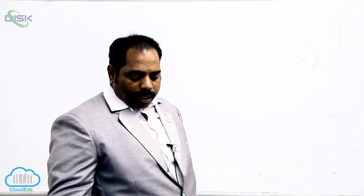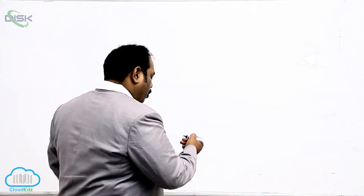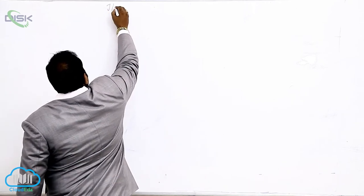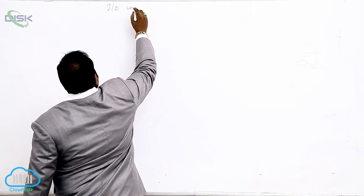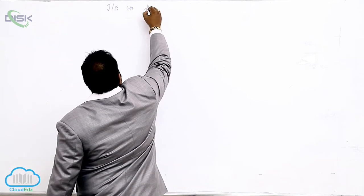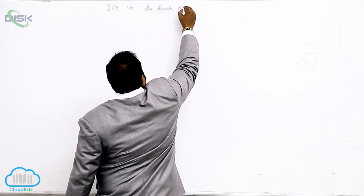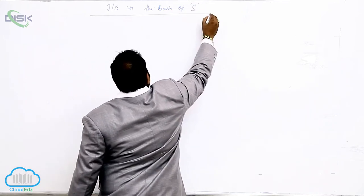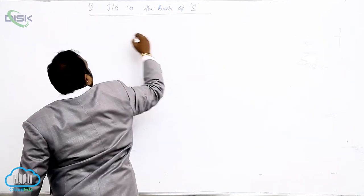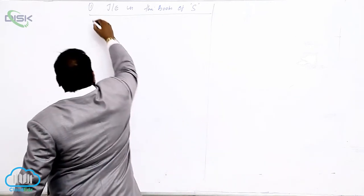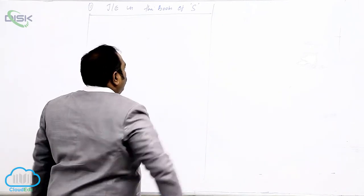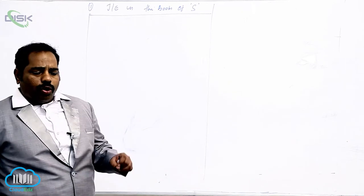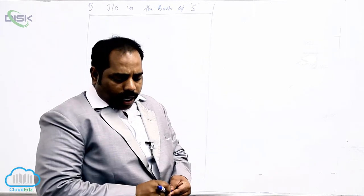Now let me teach you the first problem. V of Vicarabad consigned goods valued at ₹50,000 to S of Sikindrabad. I am writing the journal entries in the books of consignee. The consignee here is S. When you send the goods there is no entry in the books of consignee because ownership is not transferred.